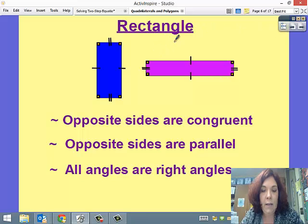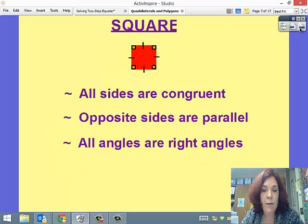A rectangle is a type of parallelogram. Opposite sides are congruent and opposite sides are parallel. But the difference is a rectangle has all four right angles—these are 90-degree angles around the whole rectangle.